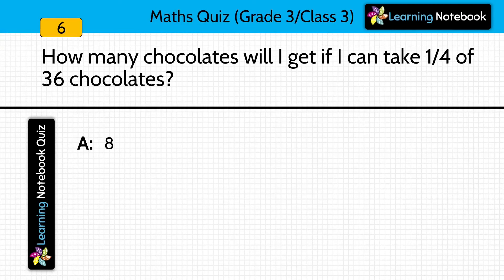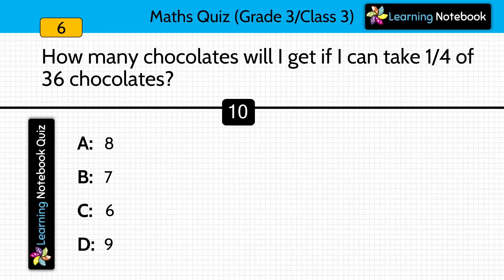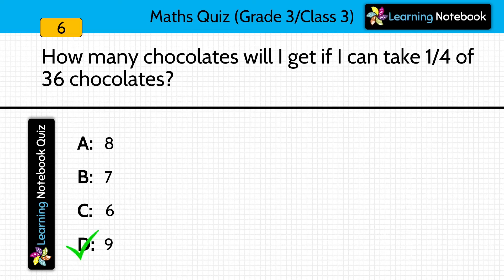Next: How many chocolates will I get if I can take one fourth of 36 chocolates? You have to calculate one fourth of 36, which is equal to 9, so option D is correct.